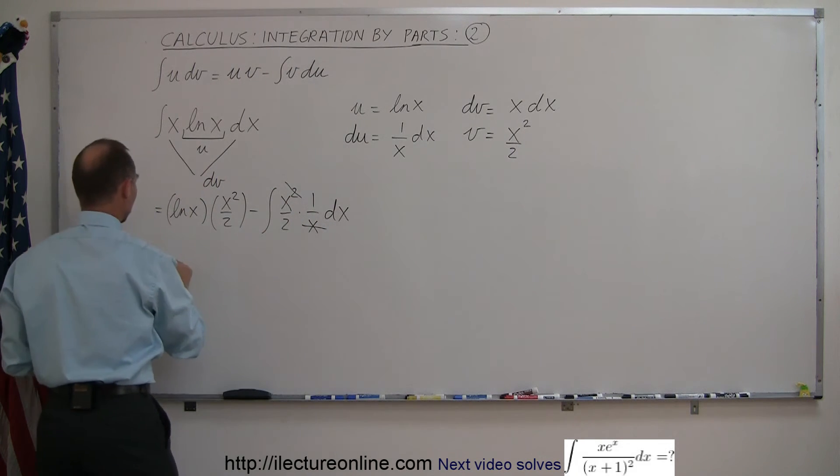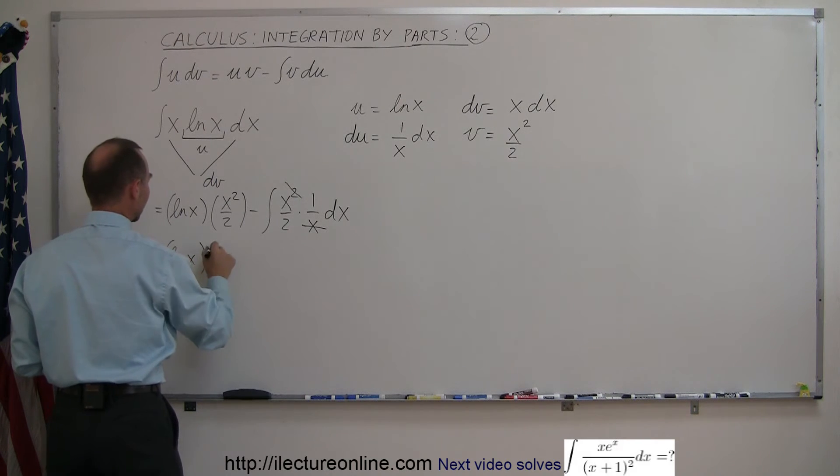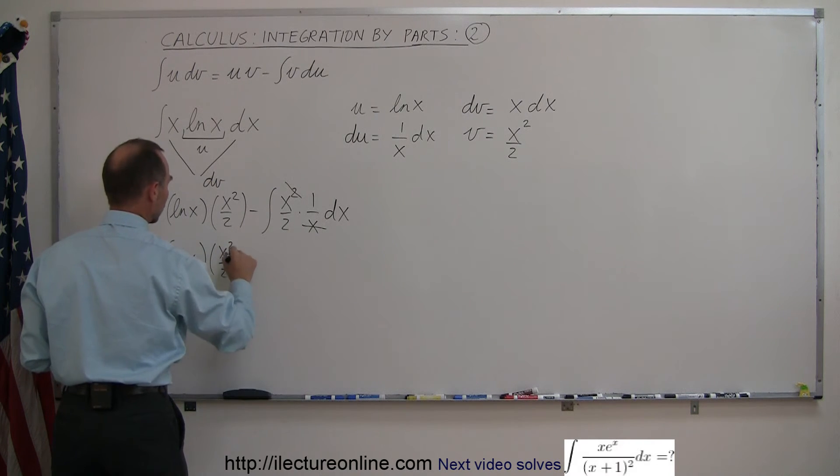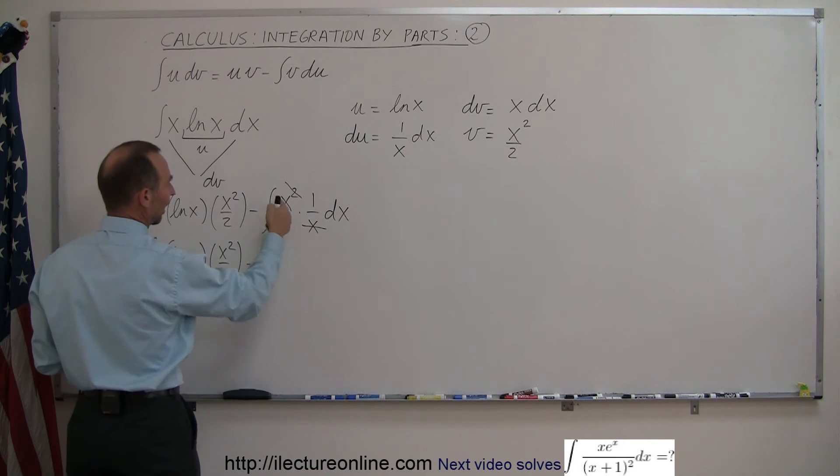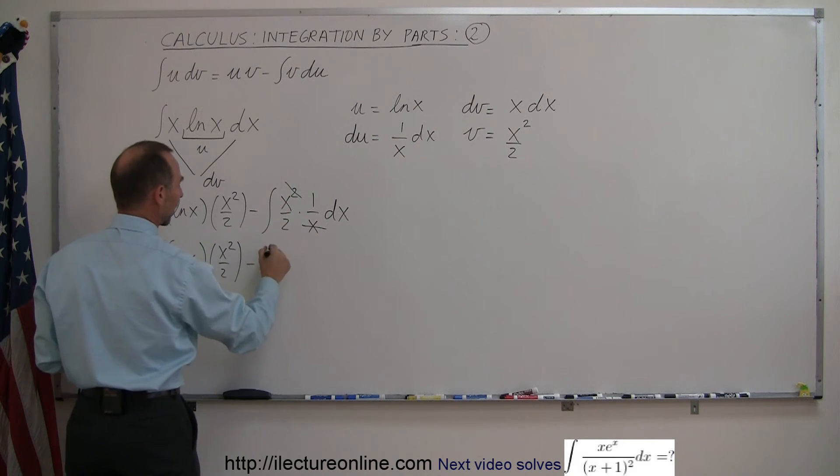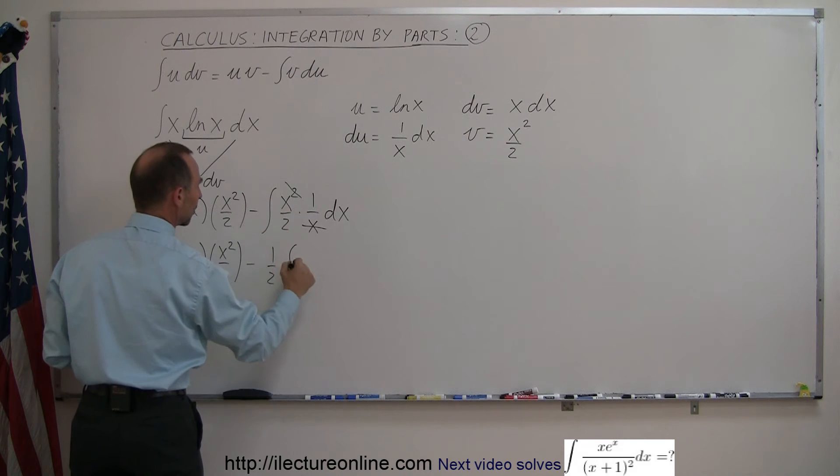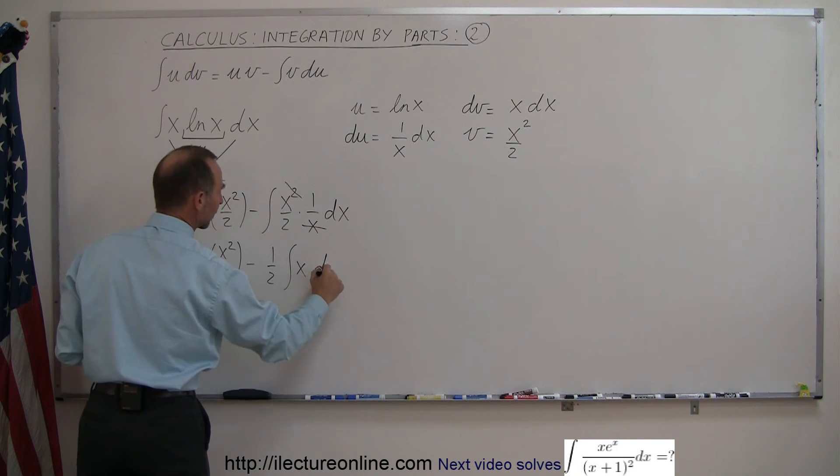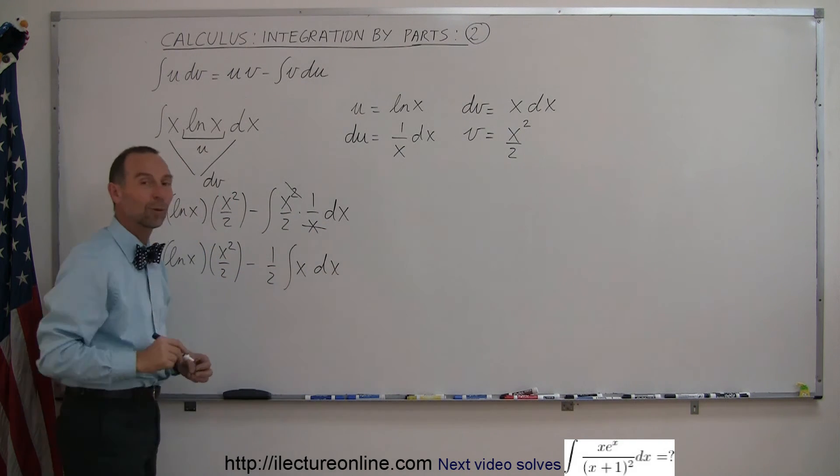And so we end up with the natural log of x times x squared over 2, minus, and I can pull out 1 half from the integral sign, 1 half times the integral of x dx. And that is an easy one to integrate.